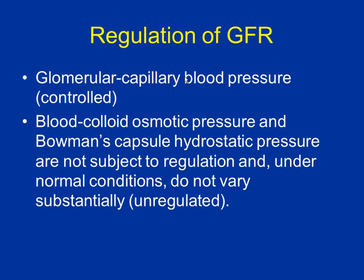The blood colloid osmotic pressure and the other pressures are not regulated — only capillary blood pressure is controlled. Two mechanisms control GFR: first, autoregulation — the kidney controlling itself, short-term. If blood pressure spikes quickly, the kidney constricts the afferent arteriole to protect nephrons. This isn't meant for long-term. If chronic high pressure continues, eventually the kidney relaxes and blood pressure shoots into the nephrons, potentially damaging them. Chronic high blood pressure is bad for the kidney.